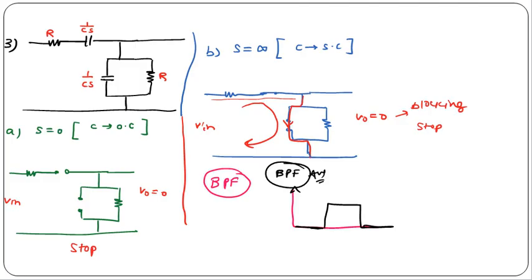To summarize, to identify a filter circuit, substitute s = 0 (low frequency) and s = ∞ (high frequency) and check the output. With this, the filter topic and five units of network analysis and synthesis are complete. Some miscellaneous topics like resonance and magnetically coupled circuits will be covered in the next lecture. Thank you for watching — if the video is good, please like and share.